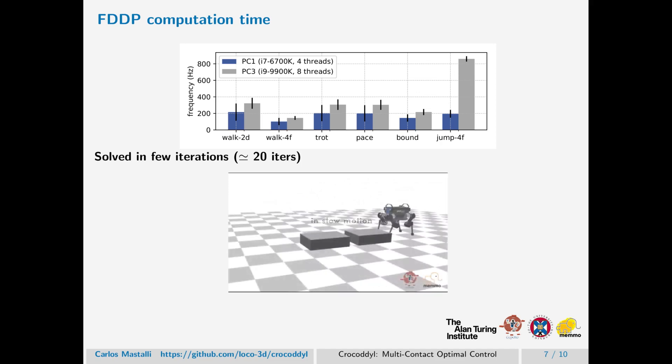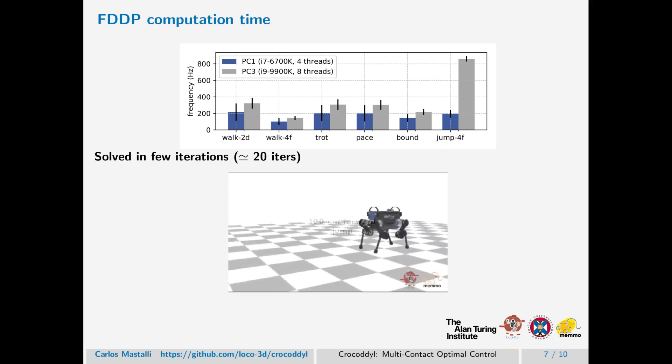The convergence rate of our solver is also good. For the problems shown in the video, we solve it in around 12 to 30 iterations, in the middle of the motion, and this is due to the fact of our feasibility handling.